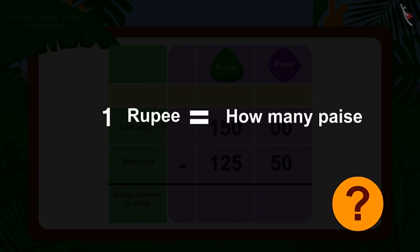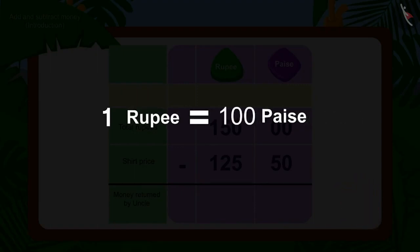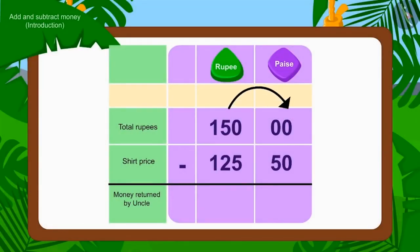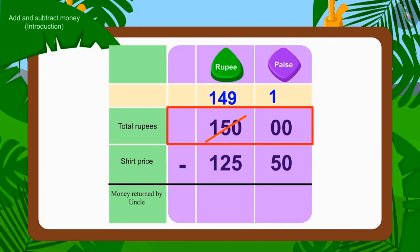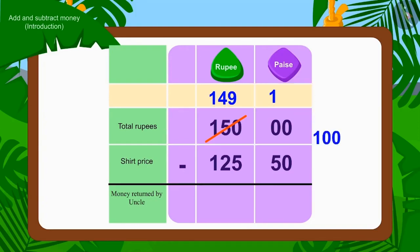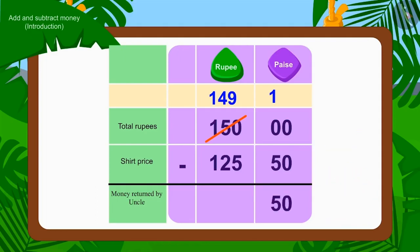How much is Rs. 1 worth? Rs. 100. We will borrow 1 rupee out of Rs. 150. We will show it by crossing out Rs. 150 to Rs. 149. Now, if we subtract 50 paise of Rs. 125.50 from the borrowed 100 paise of Rs. 150, then how many paise are left? That's right — 50 paise.